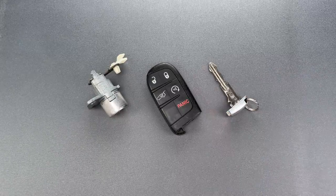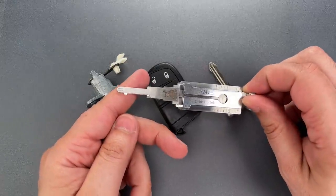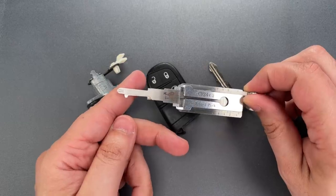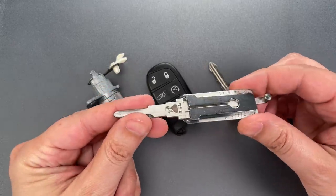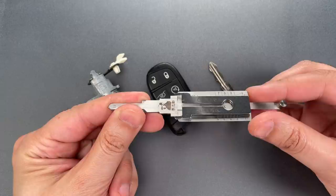That means the Lishi tool designed to open this Jeep, the CY24 model, will also open a large number of other vehicles. As usual, this tool is available over on covertinstruments.com. So let's give it a try.